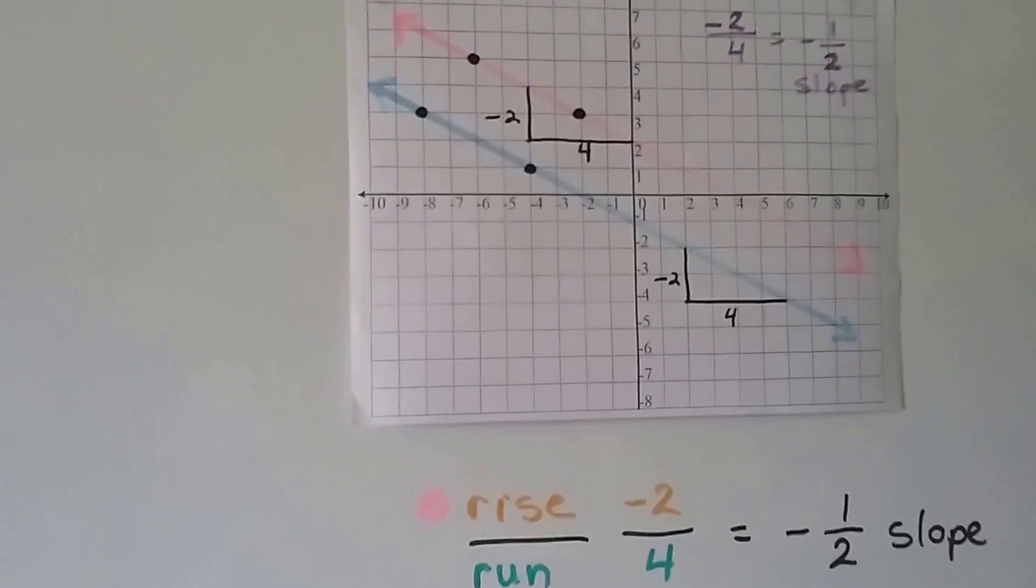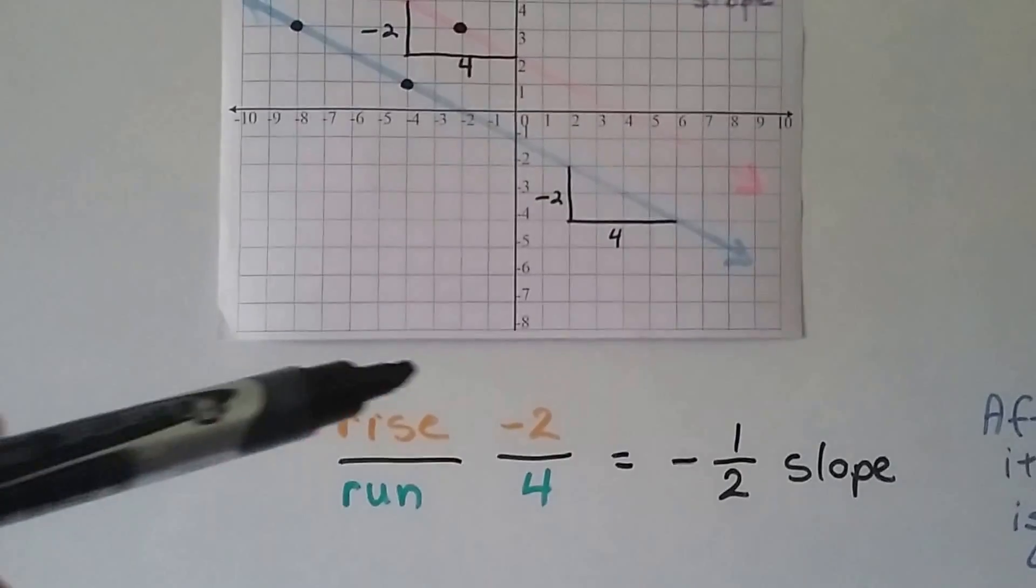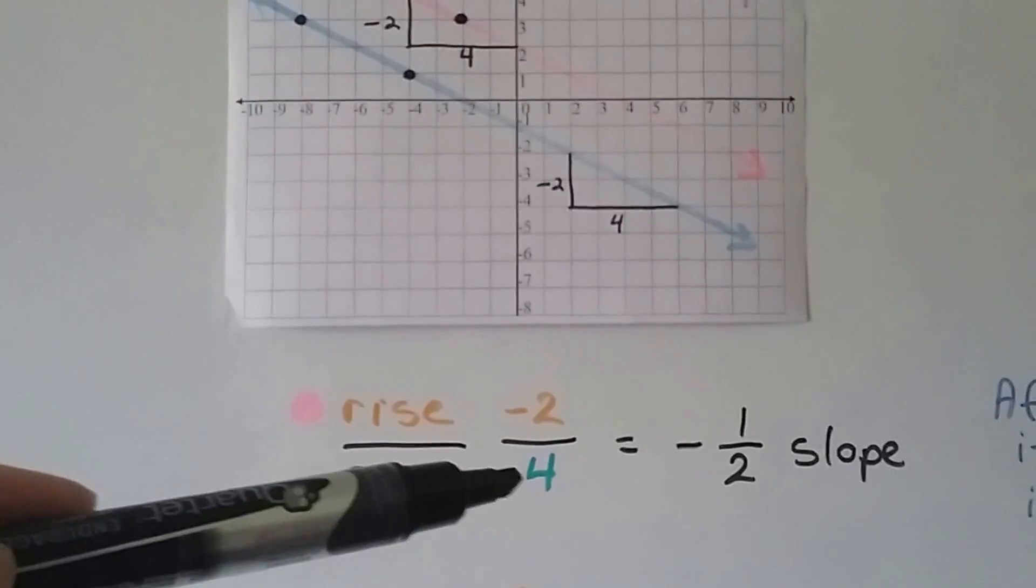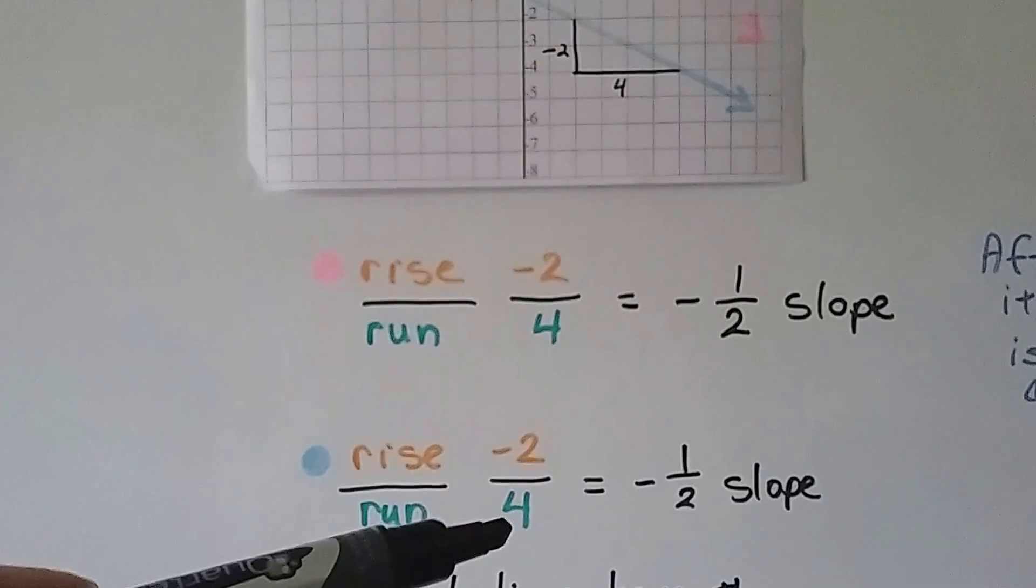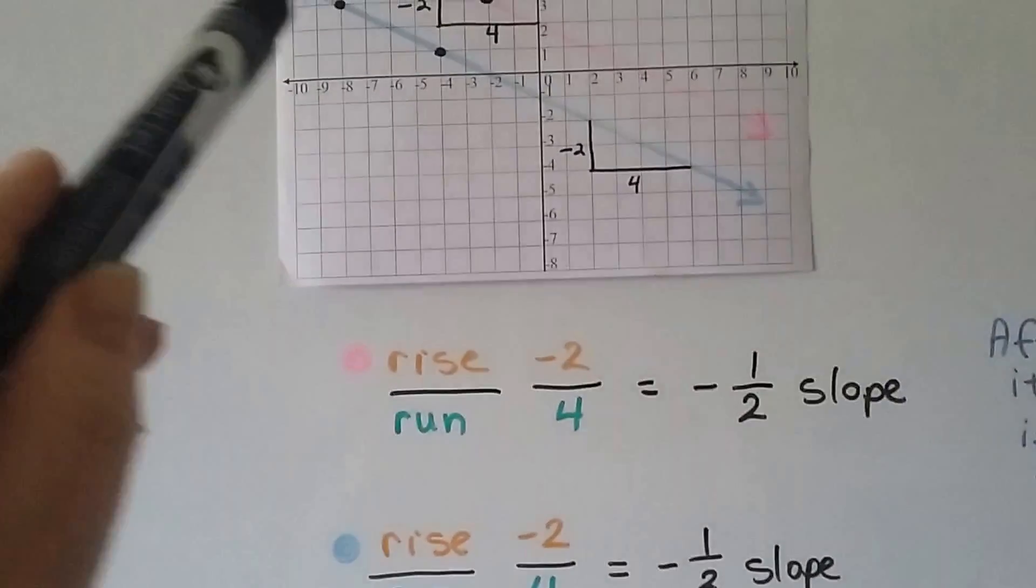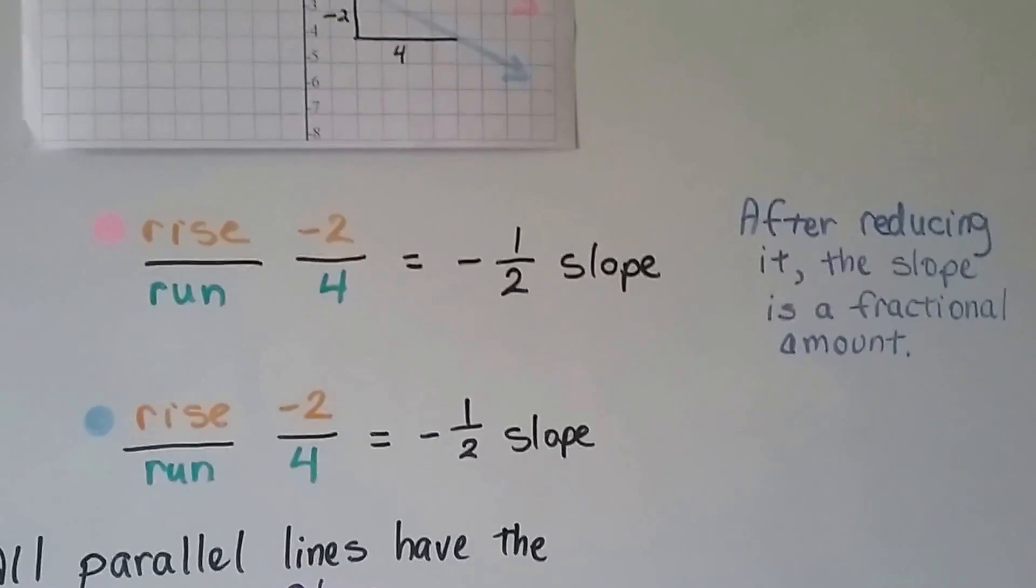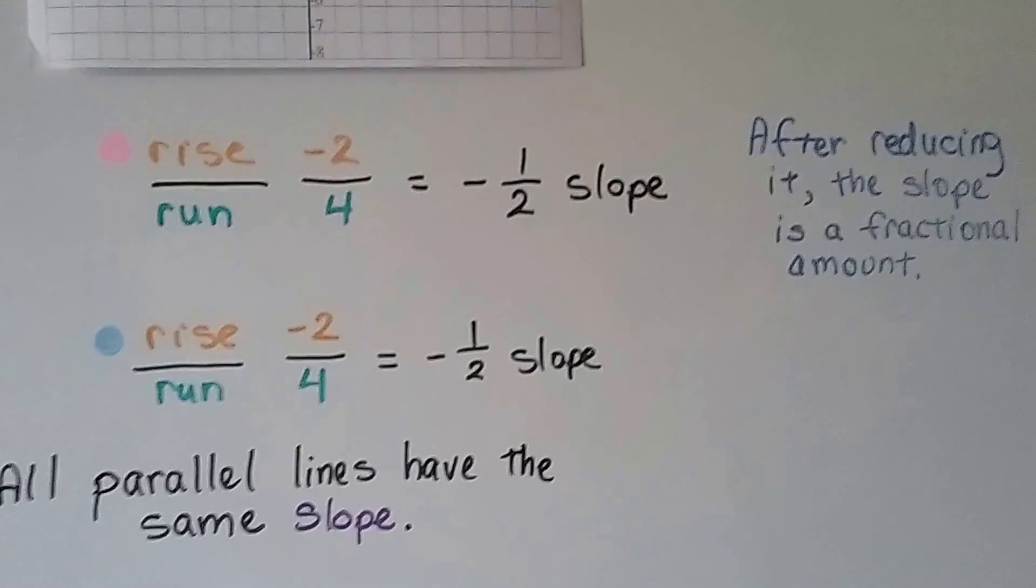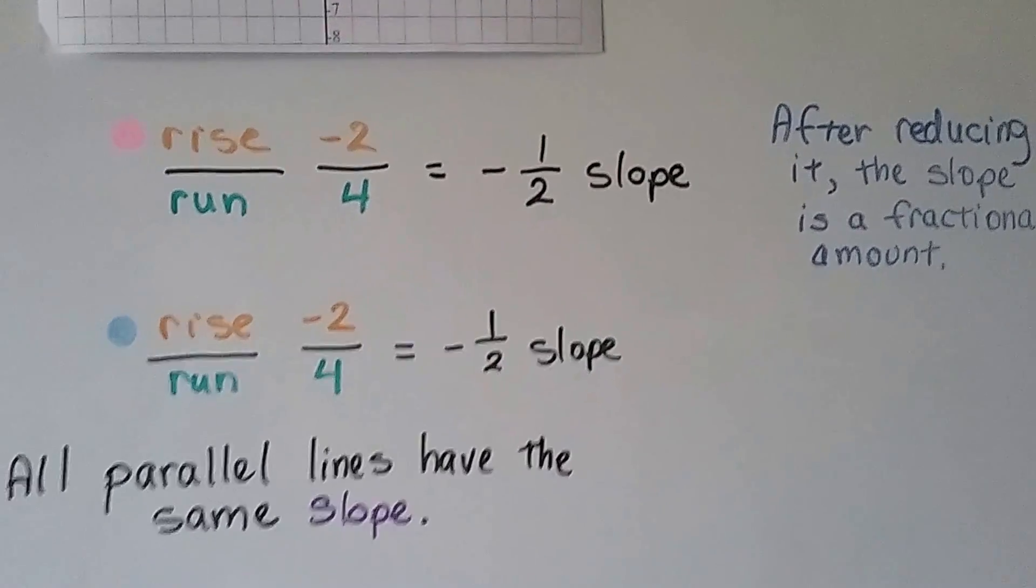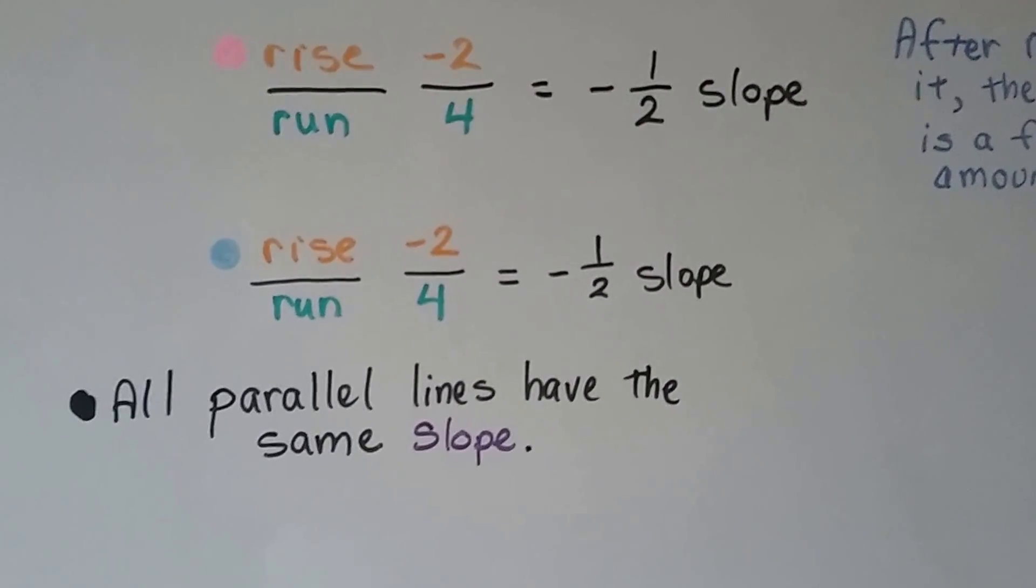You have two parallel lines. Their slope is identical. The pink line has a slope of negative 2 for the rise and 4 for the run, and the blue one has a negative 2 for the rise and a 4 for the run. They're the same slope. They're parallel to each other. They are going the same slope. After we reduce it, the slope is a fractional amount. So slopes can be fractions and decimals and mixed numbers too. All parallel lines have the same slope.